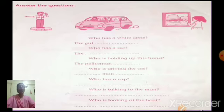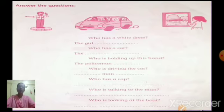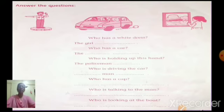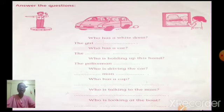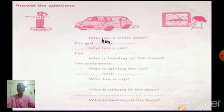First question: who has a white dress? Here you can see pictures. Observe the picture properly and then answer the question. Who has a white dress? The girl is already given. See in the question, has is there — who has a white dress? So the answer will be: the girl has. Who has a white dress? The girl has.